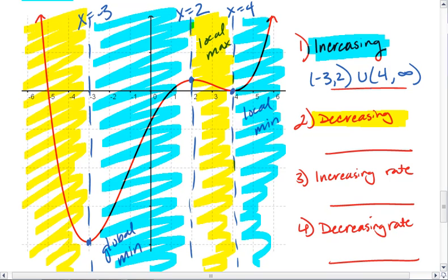We do use the rounded brackets because right at x equals 4, we're neither increasing nor decreasing, we're at a min. My graph is decreasing from negative infinity to negative 3, and then also from positive 2 to positive 4.